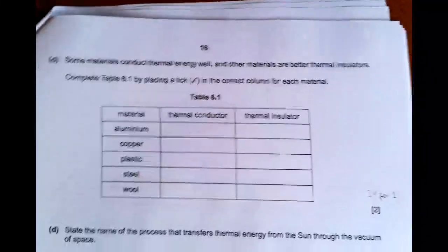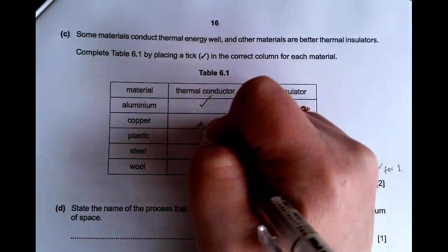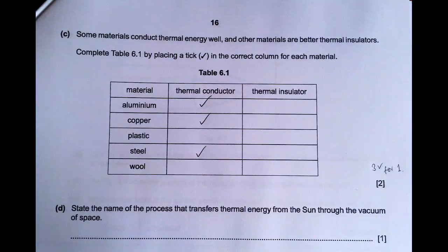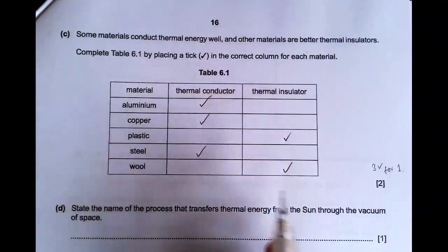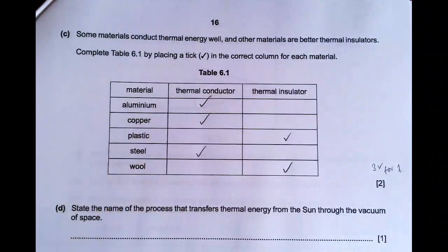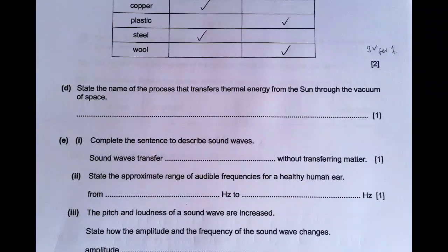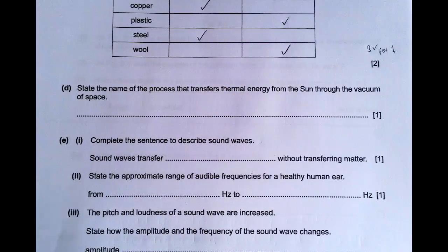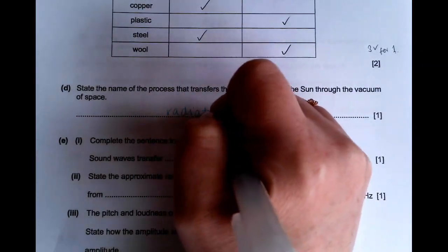In part C, you've got a list of materials, and you have to decide which ones are good thermal conductors, which ones are thermal insulators. So we know that metals are good conductors. So the first thing is to just look for the metals. So we've got aluminium, copper, and steel, and plastic and wool are insulators. If you got three of these right, you could have one mark. You needed all of them right to get the second mark. Then it says, state the name of the process that transfers thermal energy from the sun through the vacuum of space. So the heat transfer that doesn't need a medium is radiation. So you just have to remember that key term there.